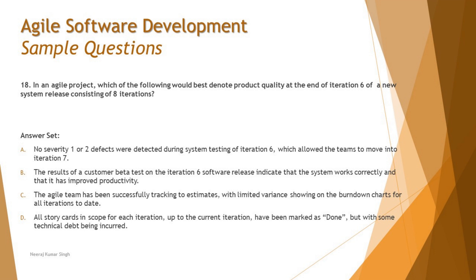We're at roughly 75% done with two more sprints remaining. Option A says: no severity one or two defects were detected during system testing of iteration six, which allowed the team to move into iteration seven. While this does come as a definition of quality, it assumes that sufficient testing has been conducted to identify all possible defects.